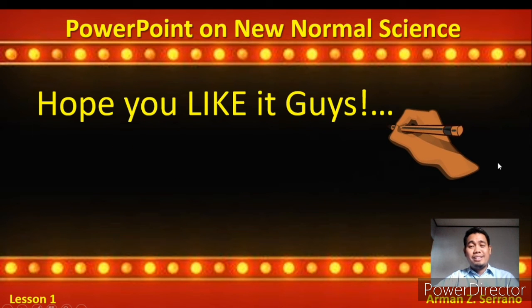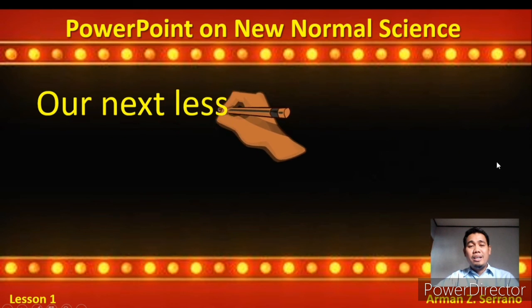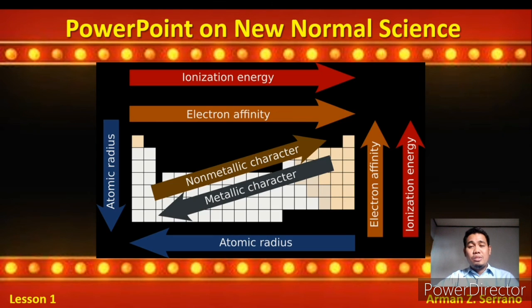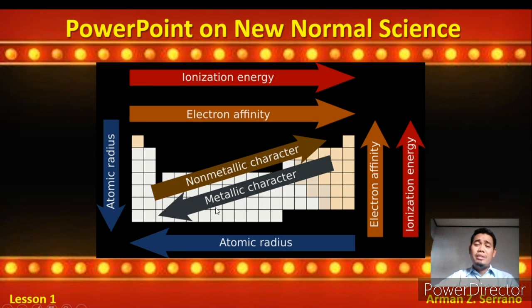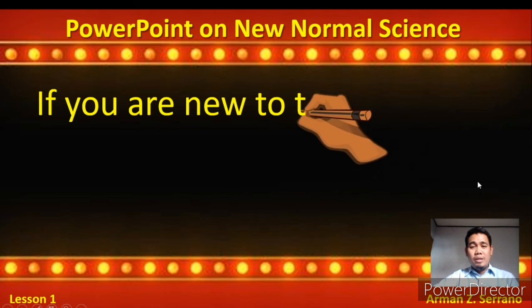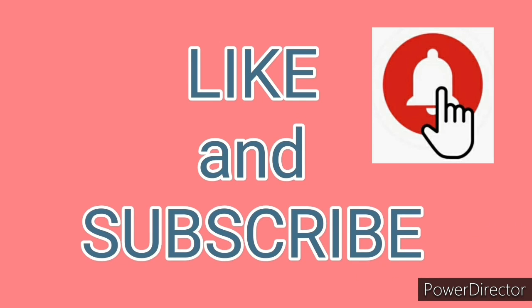Hope you liked it guys, and hope you learned something today. Our next lesson is Periodic Table Properties — you will learn the different properties of the Periodic Table when it comes to atomic radius, ionization energy, electron affinity, metallic character, and non-metallic character. There is so much more to learn and understand with regards to chemistry, and this is just the Periodic Table of Elements. If you are new to this channel, don't forget to subscribe and hit the red button!